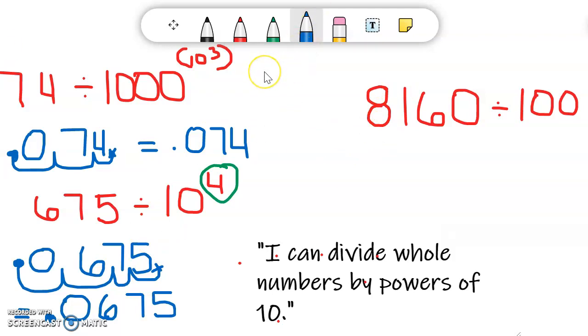So again, I'm going to rewrite my whole number, which is 8,160. And I'm going to put the decimal point at the end behind the zero, the last number. And then I'm going to count how many zeros do I have?